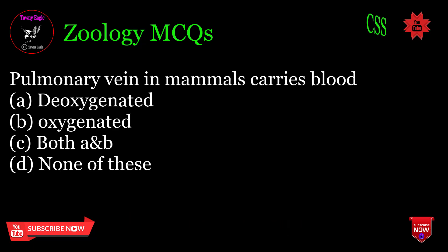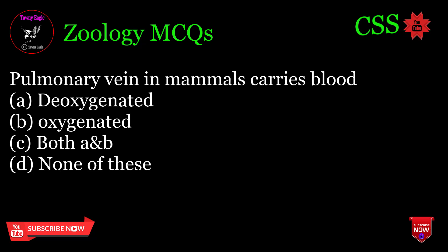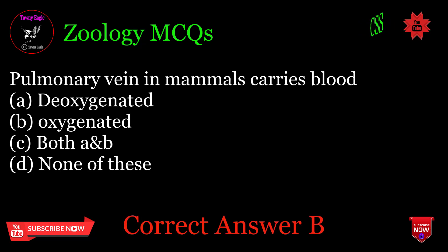Pulmonary vein in mammals carries blood: A. Deoxygenated, B. Oxygenated, C. Both A and B, D. None of these. Correct answer: B.